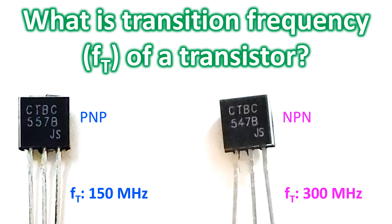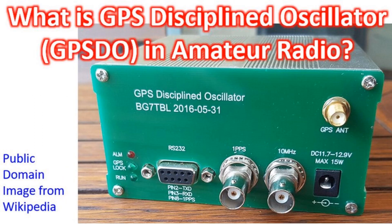In actual circuits, the effective higher operating frequency will be only a fraction of the transition frequency, as parasitic capacitance lowers the maximum frequency at which it can operate. Radio amateurs planning to design radio frequency circuits will be interested in transistors with higher transition frequency, which we often call RF transistors, in comparison to AF transistors for audio frequency applications, which need only lower transition frequency.